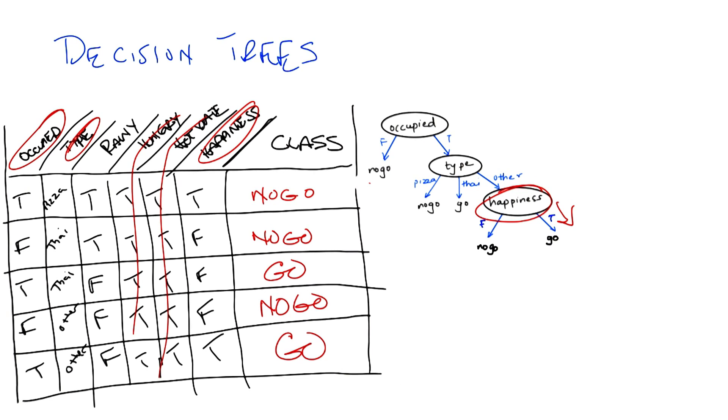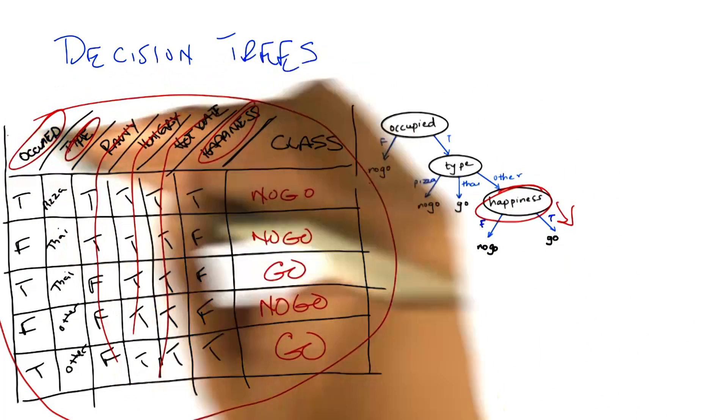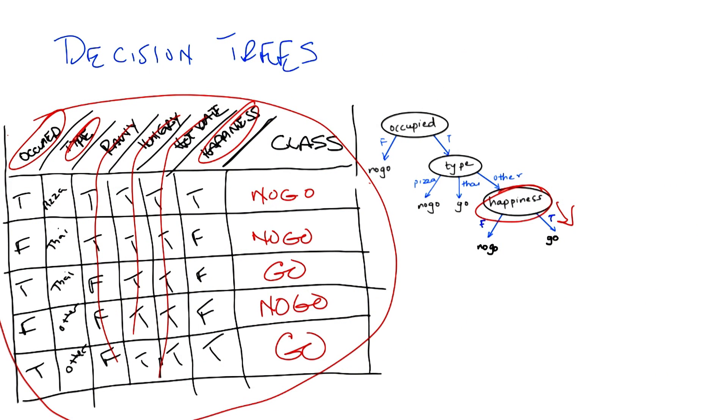Exactly. So we noticed that hot date doesn't matter, hungry doesn't matter, and rainy doesn't matter. And the only thing that matters are whether you're occupied, what type of restaurant you're at, and whether you're happy or not, or whether the patrons in the restaurant are happy or not. But here's the other thing about this. It's not just about the features. Let's tie it back into the other things that we mentioned in the beginning. This table actually represents our testing set. It's the thing that we're going to look at to determine whether we were right or wrong. These are the examples that we're going to do to see whether we generalize or not.